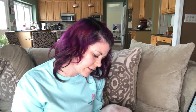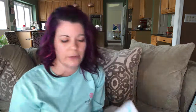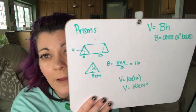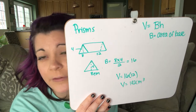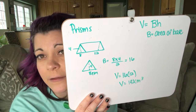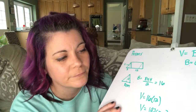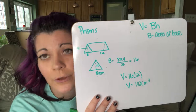Everything is in centimeters. So that would be 192 centimeters cubed once we solve for the volume. So that's the volume—192 centimeters cubed.